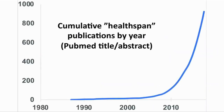The number of articles in PubMed which have Healthspan in the title or abstract has exploded. This graph shows the cumulative number. As of July the 15th, 2018, this was 929. I had a quick search and I see that it is now 1,718.